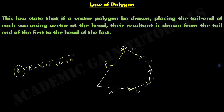R vector equals A plus B plus C plus D plus E. The key point is that the head of vector A will be at the same time the tail end of vector B. Or, if we want to find the resultant of just three vectors A, B, and C, we can call that Q, and Q will be A plus B plus C. Hope you understand the law of polygon.